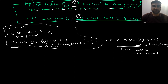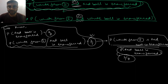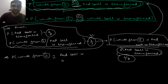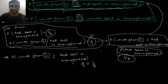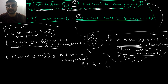P(white from 2 | red transferred) ka division 2/7 hai, aur denominator 3/8 hai. So P(white from 2 ∩ red transferred) = 2/7 × 3/8, which gives us the first term = 6/56.